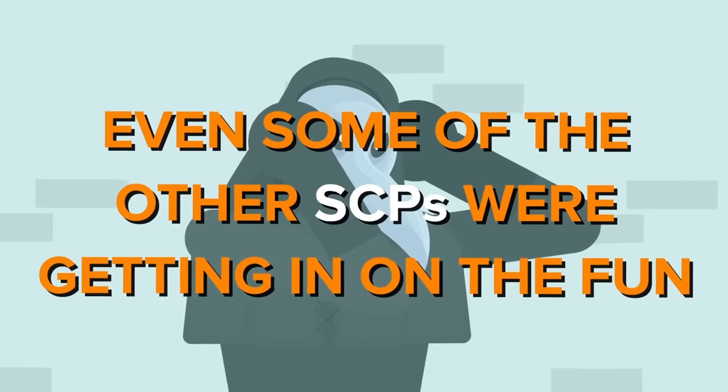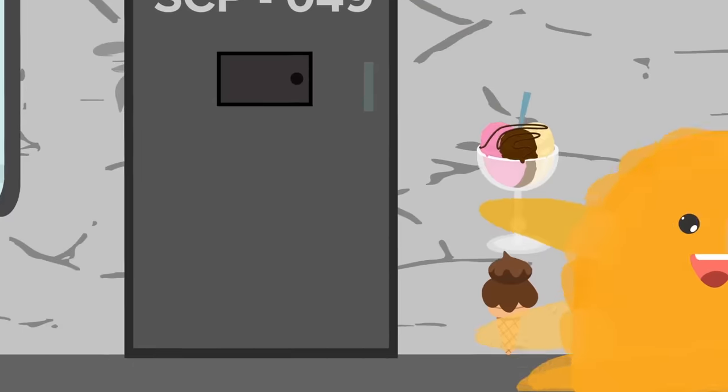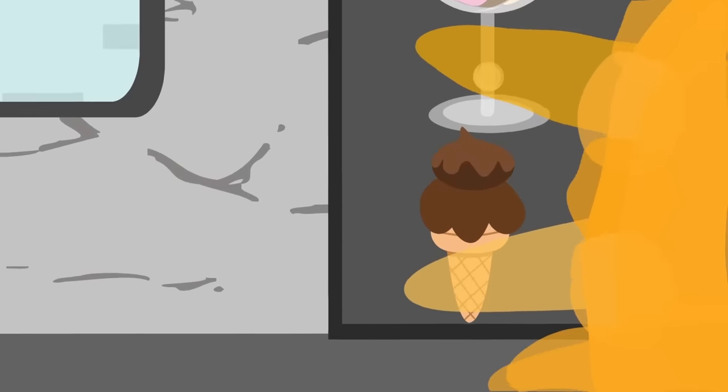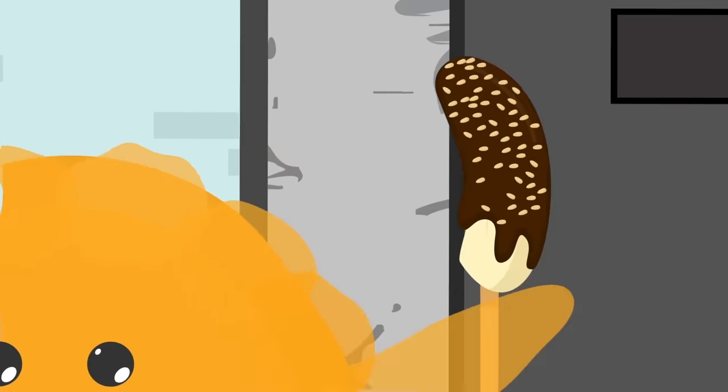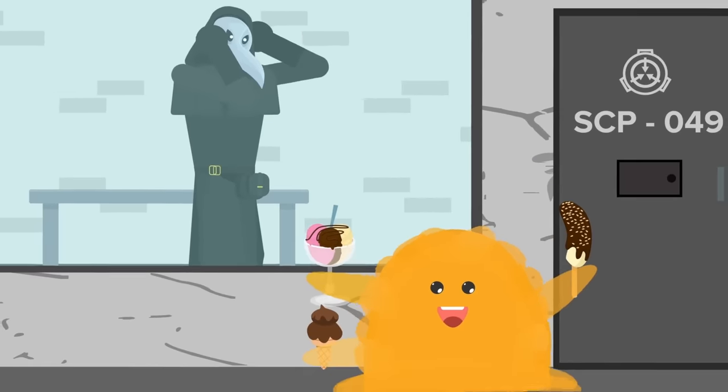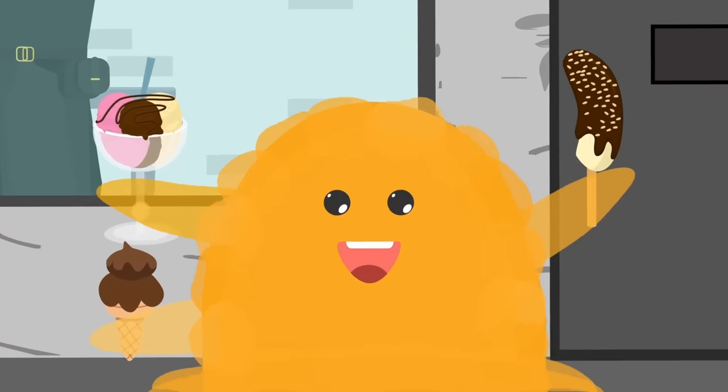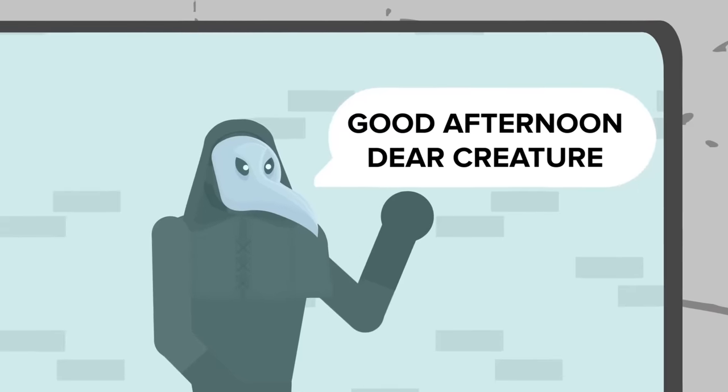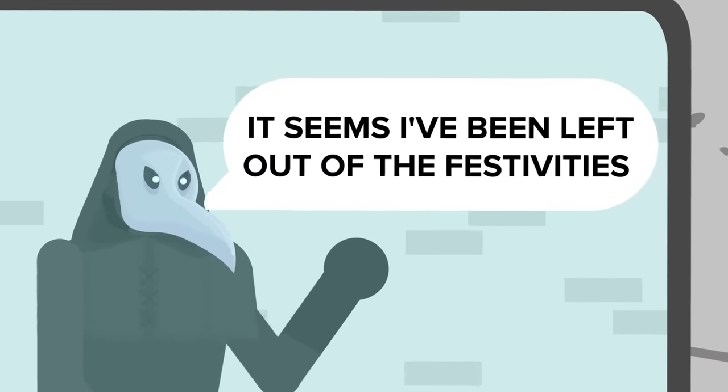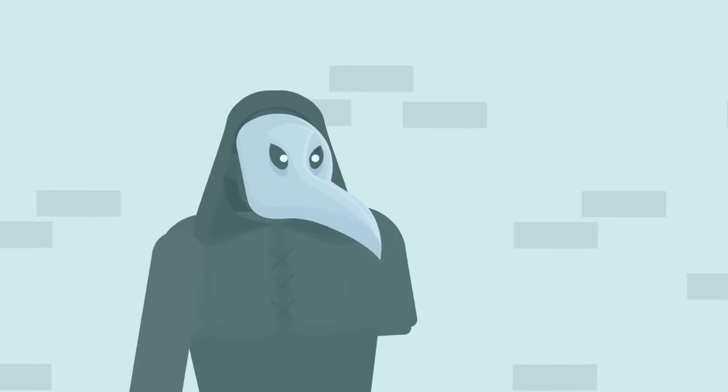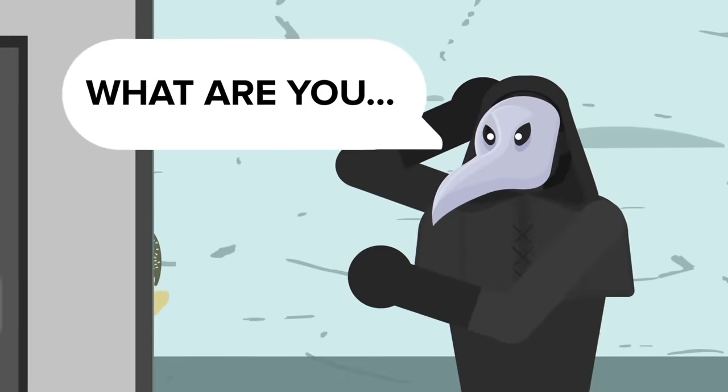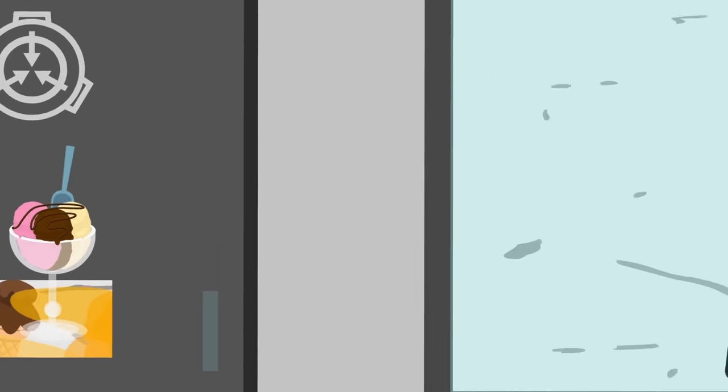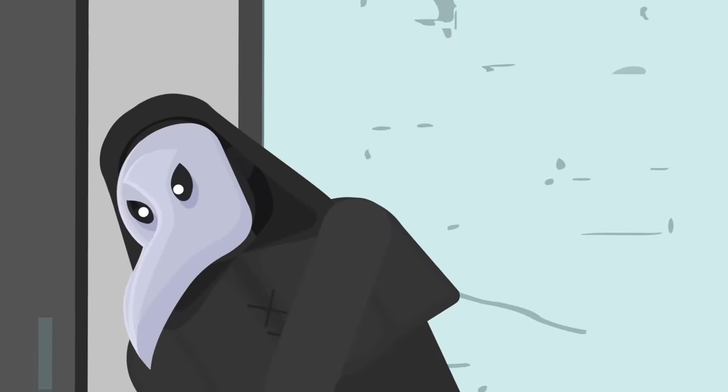Even some of the other SCPs were getting in on the fun. SCP-999 oozed by the door, holding a chocolate-vanilla swirl cone, a sundae, and a chocolate-covered frozen banana. It paused at the sight of the doctor's sad expression, making an inquisitive gurgling sound. 'Good afternoon, dear creature. It seems I've been left out of the festivities,' the Plague Doctor sighed. The Tickle Monster gurgled again, sliding over to the slot in the door. 'What are you?' He trailed off as the slimy little friend eased the slot open and pushed the sundae and plastic spoon inside.